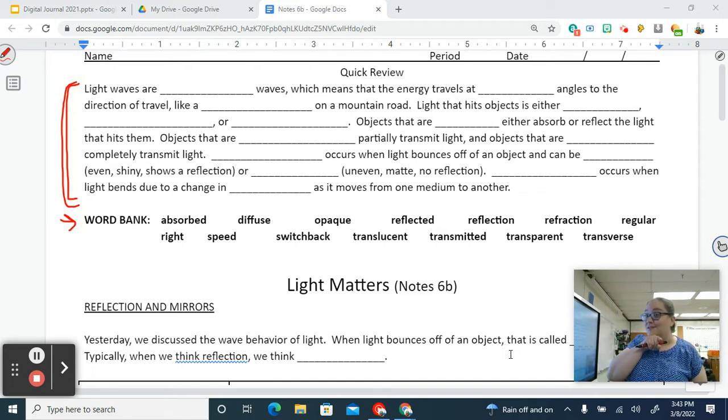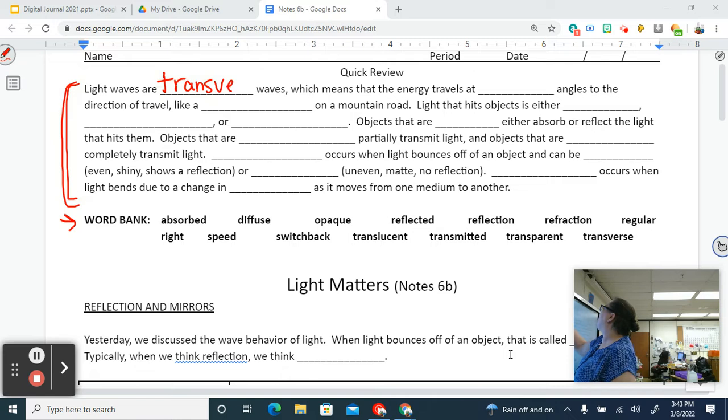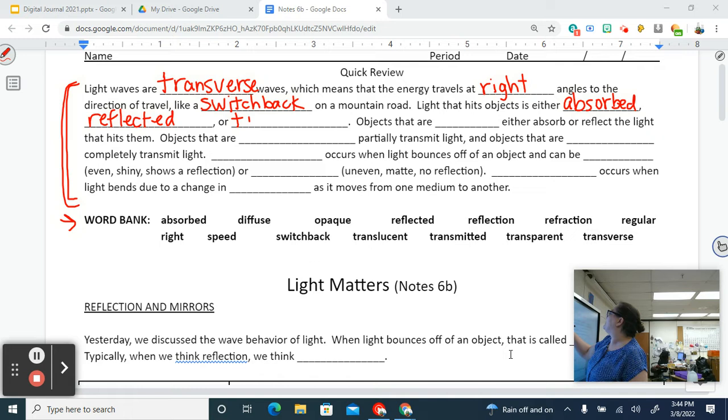Alright, welcome back. Here we go. So light waves are transverse waves, which means that the energy travels at right angles to the direction of travel, like a switchback on a mountain road. Light that hits objects is either absorbed, reflected, or transmitted.